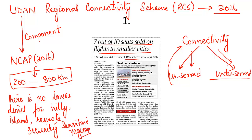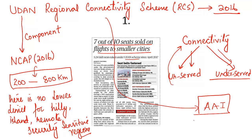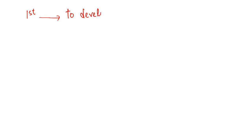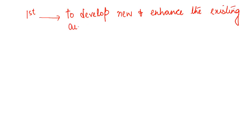How does this scheme work? The UDAN Regional Connectivity Scheme is implemented by the Airports Authority of India, which comes under the Ministry of Civil Aviation — it is the implementing agency. There are two components: component one is to develop new and enhance existing airports so that we can increase the number of flights.